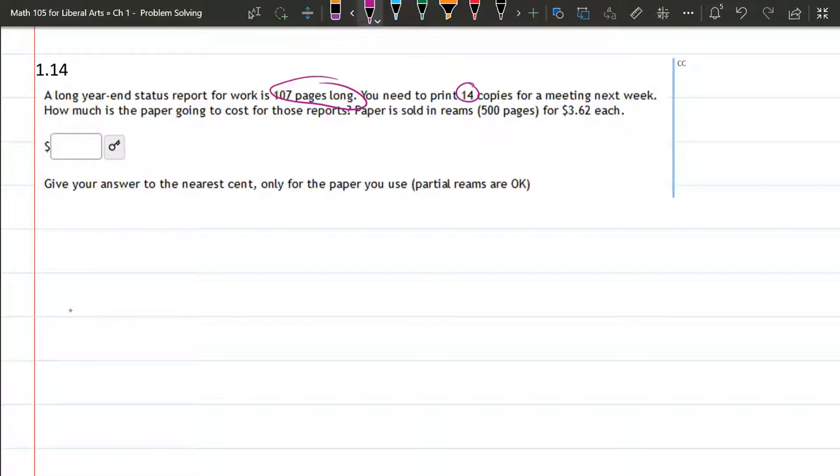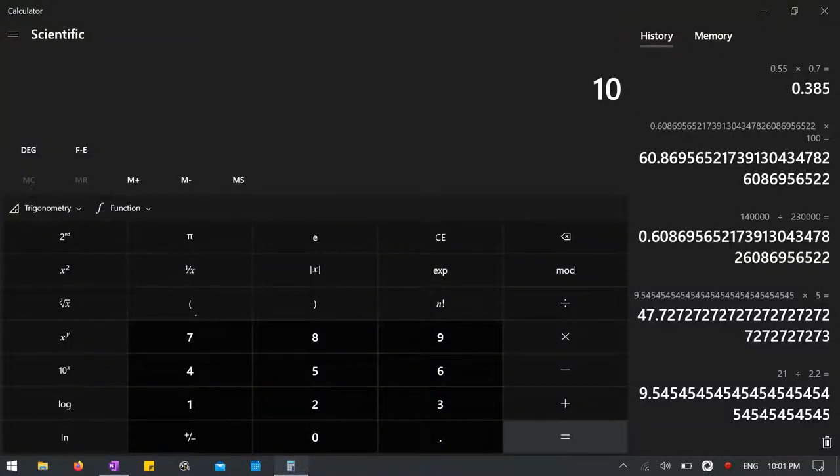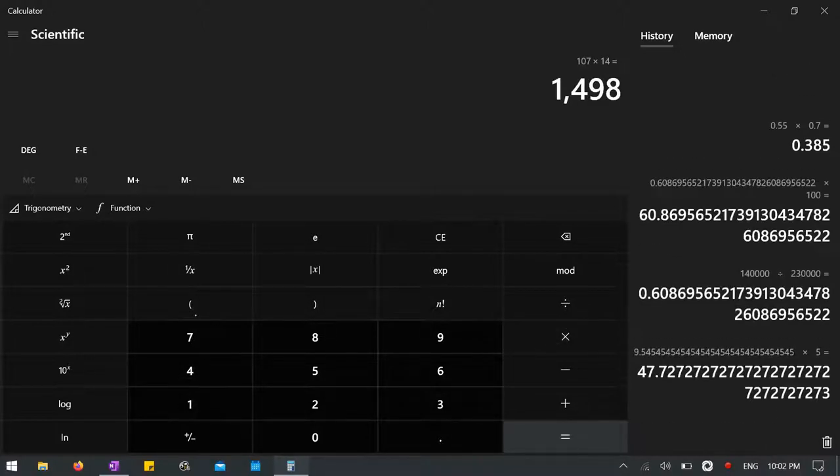Okay, so we need the total pages needed or printed. We have 107 in each, and there's 14 of them. So 107 times 14 equals 1498.